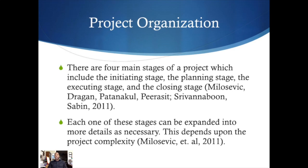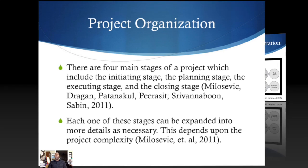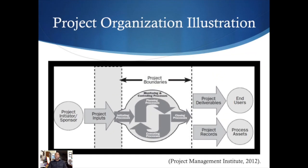There are four main stages of a project: the initiating stage, planning stage, executing stage, and closing stage. Each stage can be expanded into more detail depending on the complexity of the project. As an illustration, the initiating stage is followed by the planning process, where monitoring and controlling begins. Then there's the executing stage, and as that process continues — planning and replanning, executing, and addressing different issues — you're monitoring and controlling all of those elements until you finally reach the closing process.